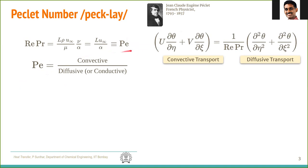By definition, the term 1/Pe appears as the coefficient of the diffusive term, so the Péclet number can be interpreted as the ratio of convective transport to diffusive (molecular) transport of heat.